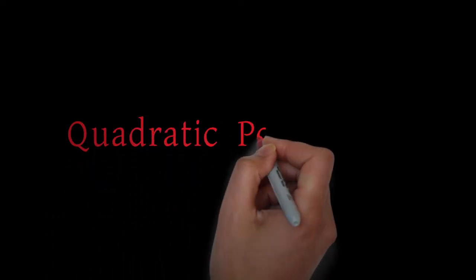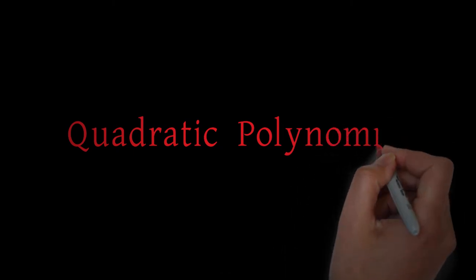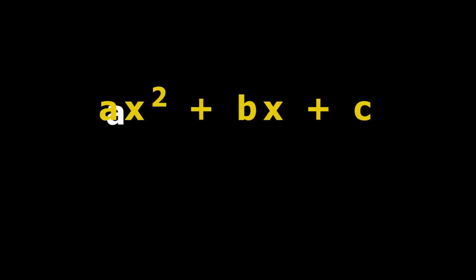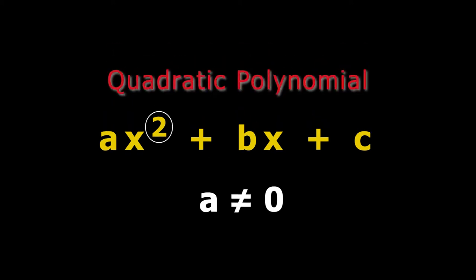Dear students, we have already discussed about polynomials — let's recall those. The general form of a quadratic polynomial is ax squared plus bx plus c, where a is not equal to 0. Since the degree of x is 2, it is called a quadratic polynomial.